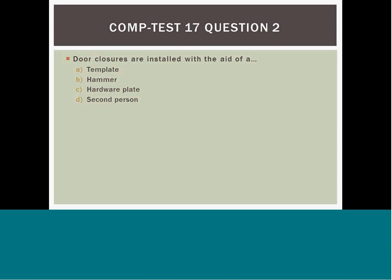Question 17: Locks are installed with the aid of A) a template, B) a hammer, C) a plate, or D) a second person. Though B, C, and D could all be correct, answer A — template — is the best selection because a template is required to meet the manufacturer's recommended specifications. A hammer, hardware plate, or a second person are all possible aids but are not required.